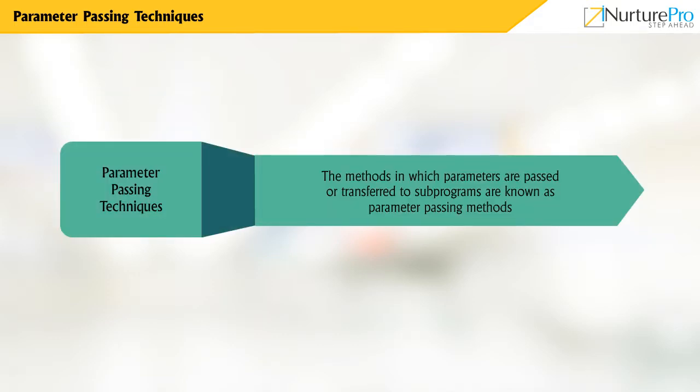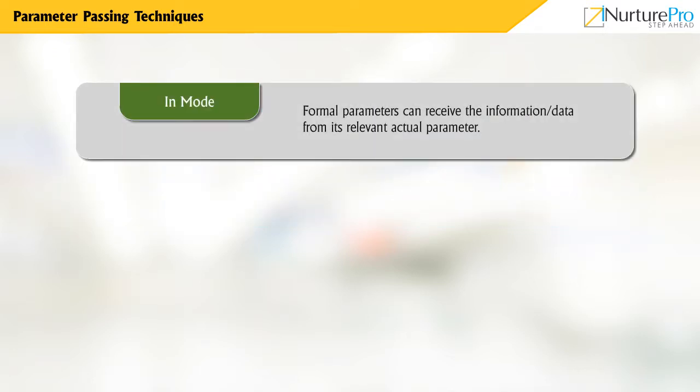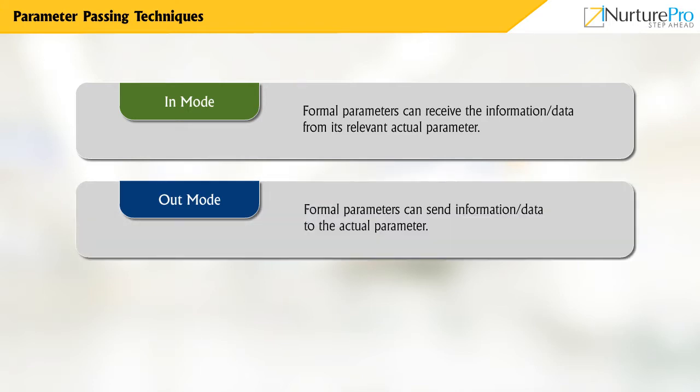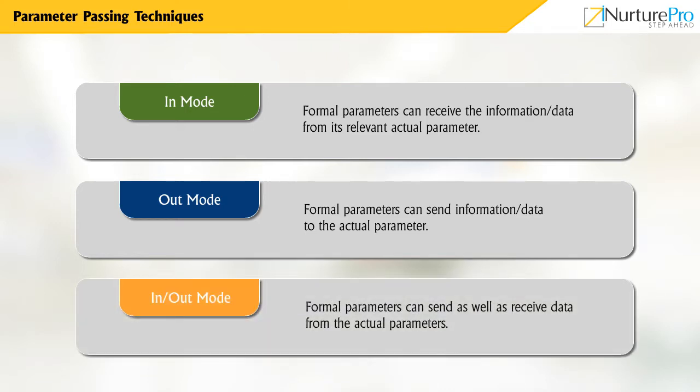The methods in which parameters are passed or transferred to sub-programs are known as parameter passing methods. There are three semantics models for parameter passing: In mode, where formal parameters can receive information or data from its relevant actual parameter; Out mode, where formal parameters can send information or data to the actual parameter; and In-or-out mode, where formal parameters can both send and receive data from the actual parameters.